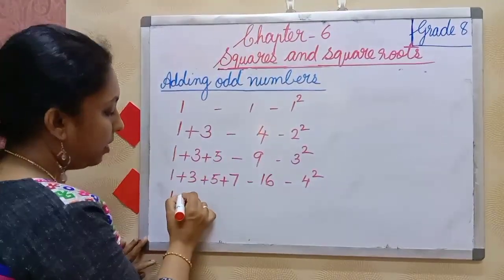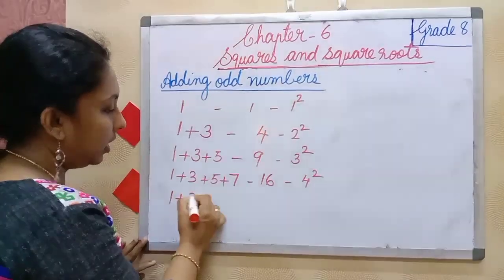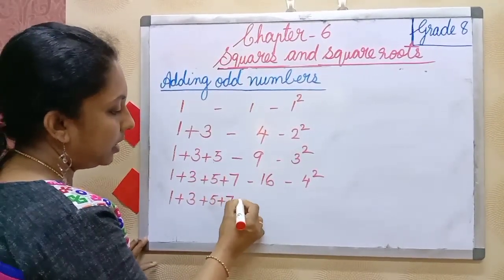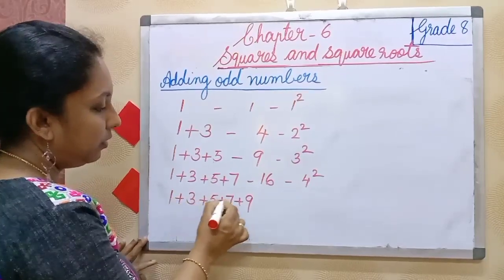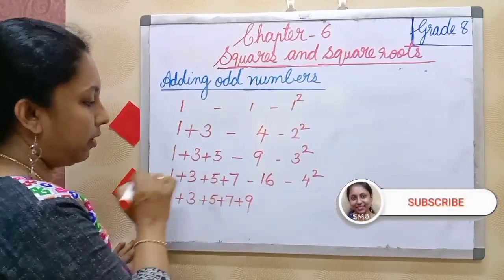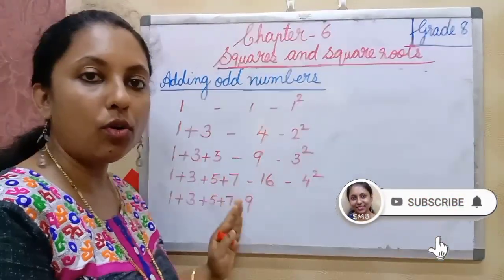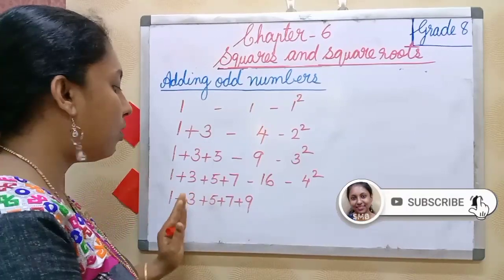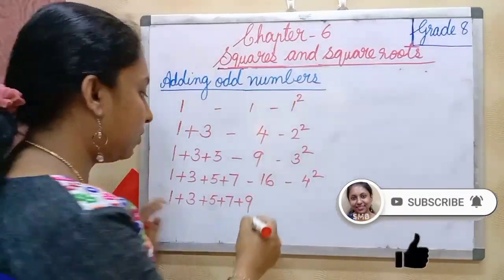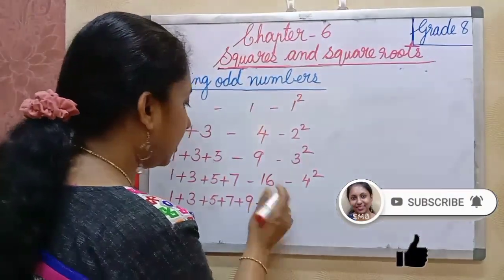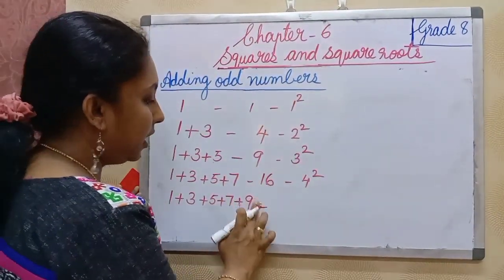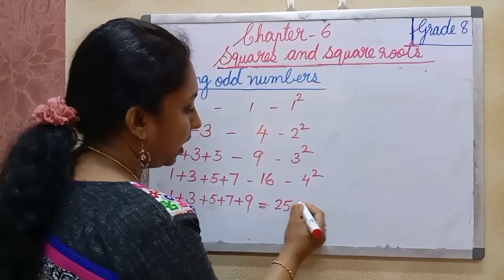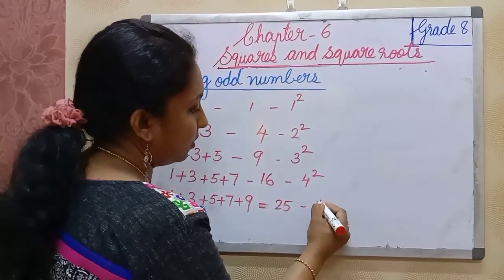Then 1 plus 3 plus 5 plus 7 plus 9 — the first five odd natural numbers. The sum of the first four was 16, so 16 plus 9 is 25. And 25 is 5 square.